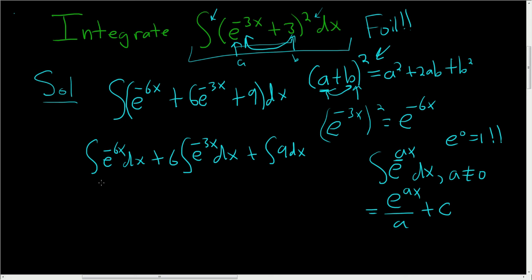Okay. So here, a is negative 6. So we're going to divide this by negative 6. We get negative e to the negative 6x over 6. So I just wrote the negative on the outside plus 6 e to the negative 3x over negative 3. I didn't write it that time. Plus 9x plus c.